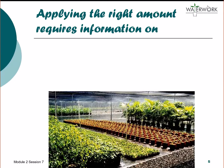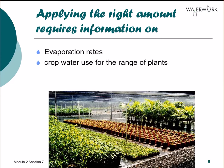The water requirement for the nursery's plants is determined by factors such as evaporation rates, water holding capacity of the growing media, and the types and sizes of containers to be irrigated. Evaporation rates can be obtained from the internet, local weather stations, or agricultural research stations. Look at the average summer evaporation rates and the maximum summer rates to understand the range of evaporation rates the plants will experience and use this as a guide for determining crop water use.